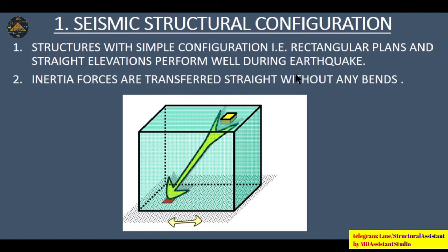When we study seismic structural configuration, a structure with simple configuration — that is, rectangular plans and straight elevation — performs well during earthquakes. Sometimes we see structures where all the columns are in a single line along both axes and all the beams are in a single line along both axes. We also see structures where the columns are planned in a haphazard way.